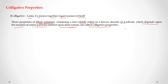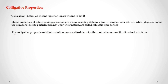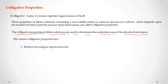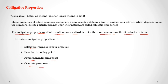For example, suppose we are dissolving one mole of urea and one mole of sucrose in water. The change in vapor pressure will remain the same in both conditions. This property is known as a colligative property. The colligative properties of dilute solutions are used to determine the molecular mass of the dissolved substance. The various colligative properties are: relative lowering in vapor pressure, elevation in boiling point, depression in freezing point, and osmotic pressure.